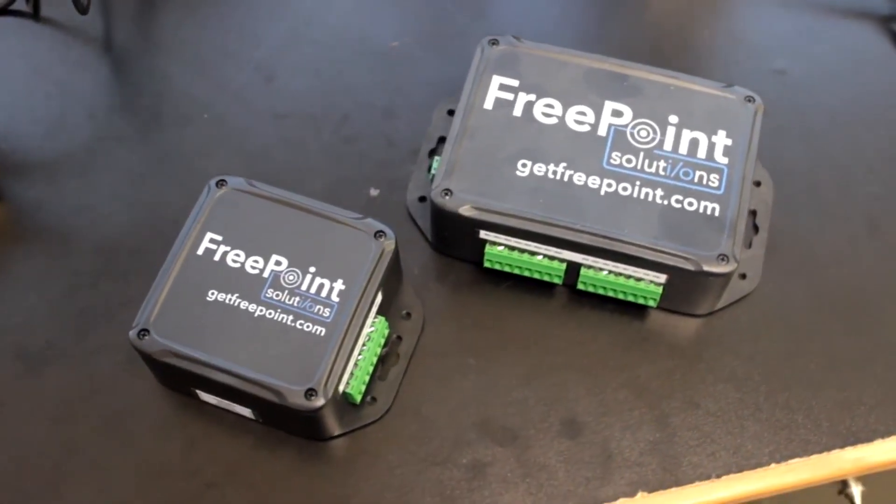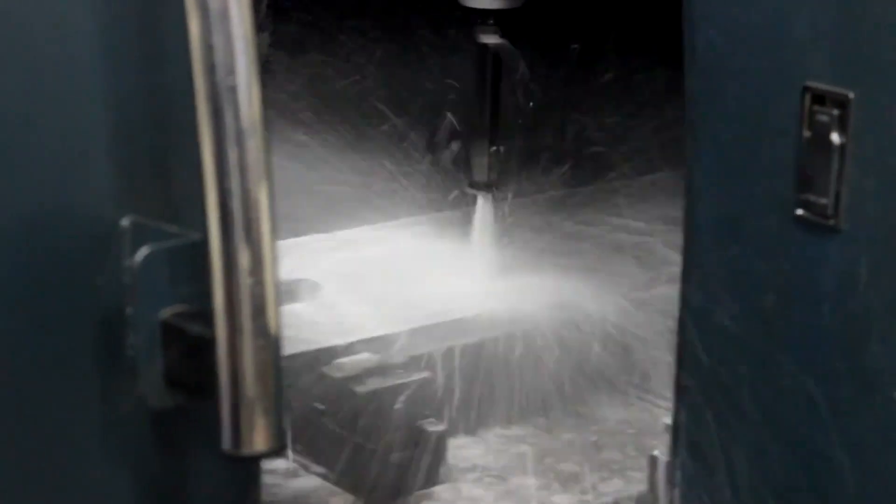Freepoint's black boxes can measure numerous inputs, for example when a grinder has a force applied to it, or when the machine is flowing water, either for coolant or a water jet.